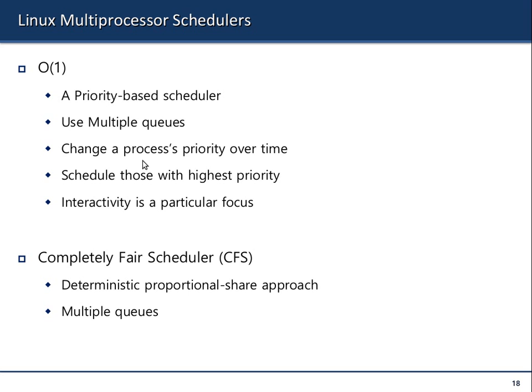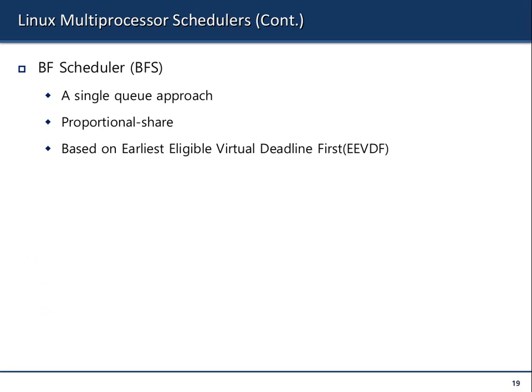When Linus Torvalds created Linux, he was using a 386 or 286 — single processor only. Eventually, at Pentium, the number of cores grew, Linux became multiprocessor, and it implemented multiple queues instead of single-queue scheduling. The BFQ scheduler, on the other hand, uses a single-queue approach — it's proportional share based on earliest eligible virtual deadline. You can read more about the details of how the Linux kernel schedules processes in the book and other sources.